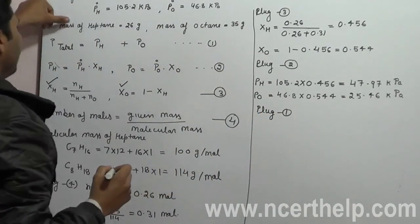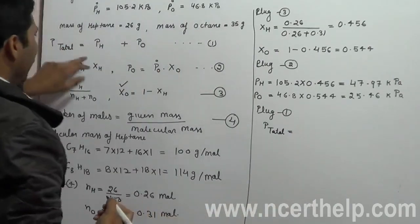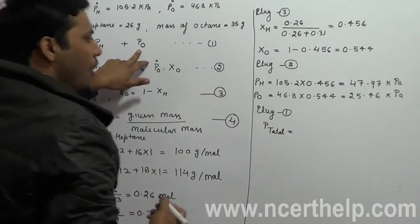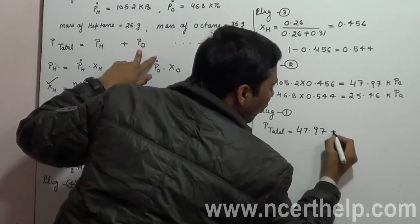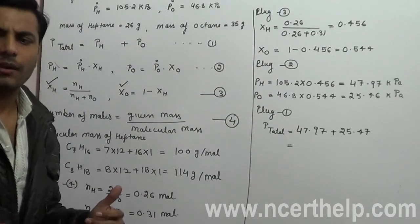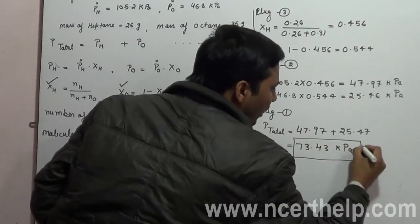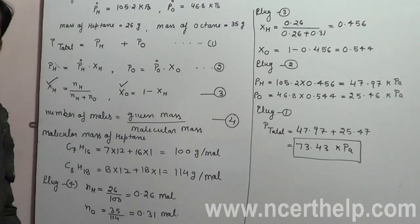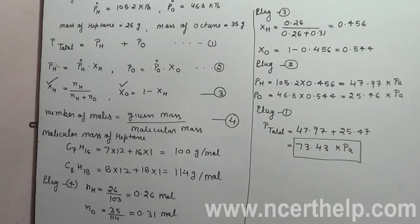Now plug into equation one: P_total equals partial pressure of heptane plus partial pressure of octane, that is 47.97 plus 25.47, giving 73.43 kPa. This is our answer. Our approach used the formula for total pressure, partial pressure (Raoult's Law), molar fraction, and number of moles — applied in reverse order to arrive at the solution.